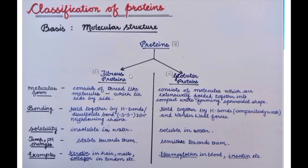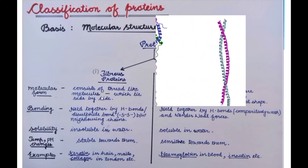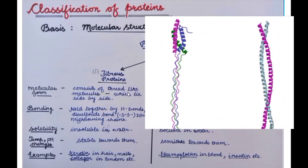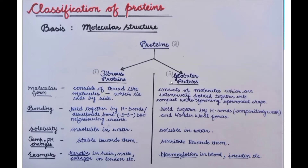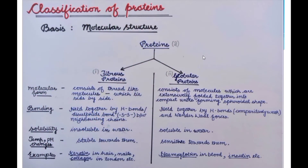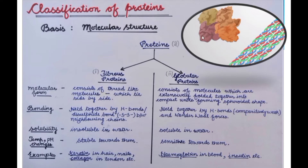Fibrous proteins have thread-like molecules lying side by side. These thread-like molecules are basically the polypeptide chains. In globular proteins, the polypeptide chains are folded together into compact units forming a spheroidal shape. This is our globular protein in which the polypeptide chain is extensively folded, giving it a spheroidal shape due to extensive folding.